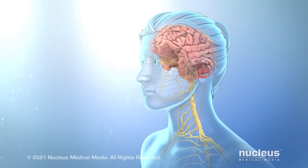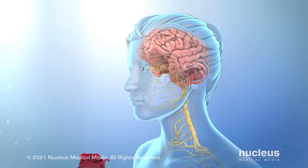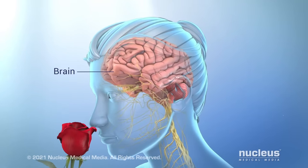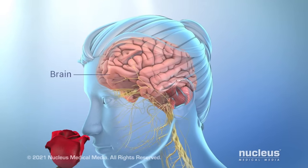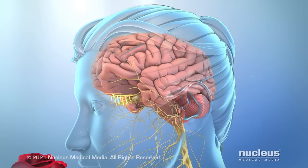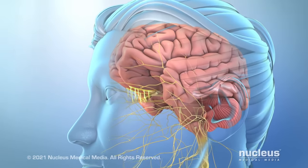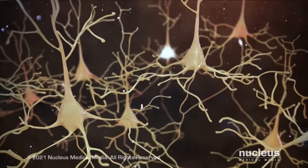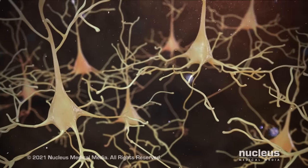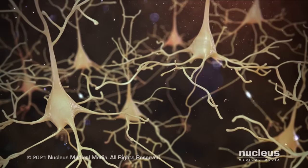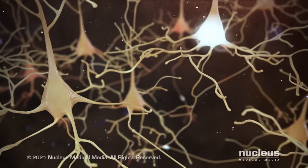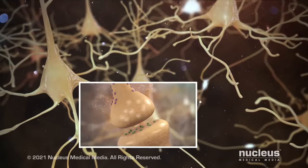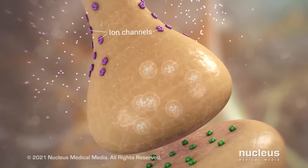To sense our world, your nerves send electrical signals to and from your spinal cord and brain. Sensors throughout our body collect information about our surroundings, and this information is sent by signals to our brain through a series of nerve cells.